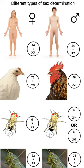The platypus has 10 sex chromosomes; males have an XY XY XY XY XY pattern while females have 10 X chromosomes. Although it is an XY system, the platypus sex chromosomes share no homologues with eutherian sex chromosomes. Instead, homologues with eutherian sex chromosomes lie on the platypus chromosome 6, which means that the eutherian sex chromosomes were autosomes at the time that the monotremes diverged from the therian mammals.